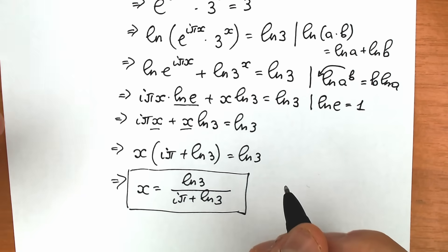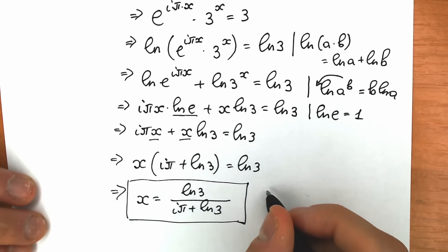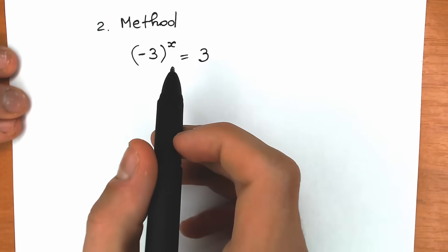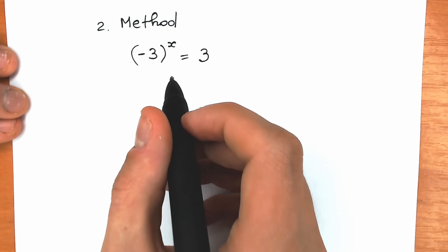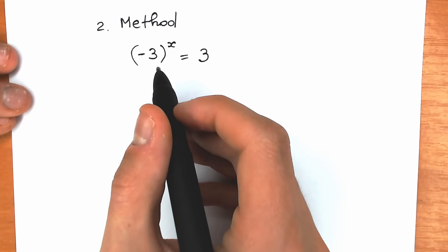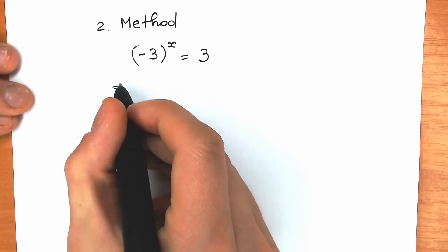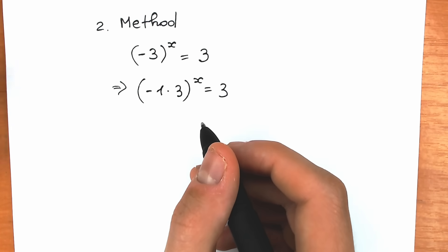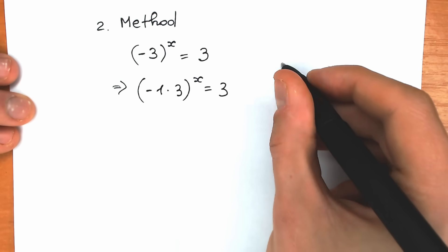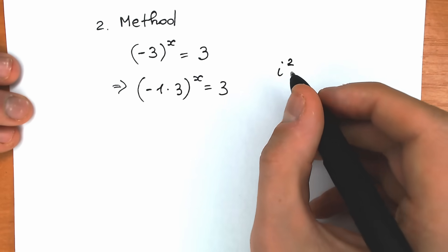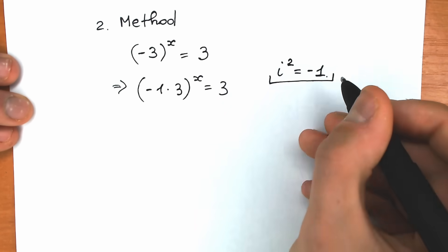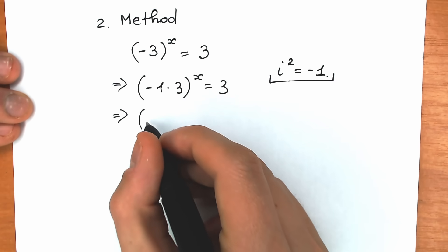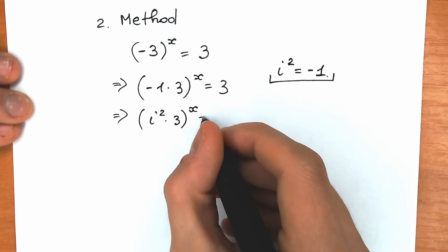Now let's solve this using the second method. We have minus 3 to the x equals 3. Again we write minus 3 as minus 1 times 3. In terms of complex numbers, i² = minus 1, so let's substitute i² for minus 1. We get (i² · 3) to the power x equals 3, which we can write as (3i²) to the power x equals 3.